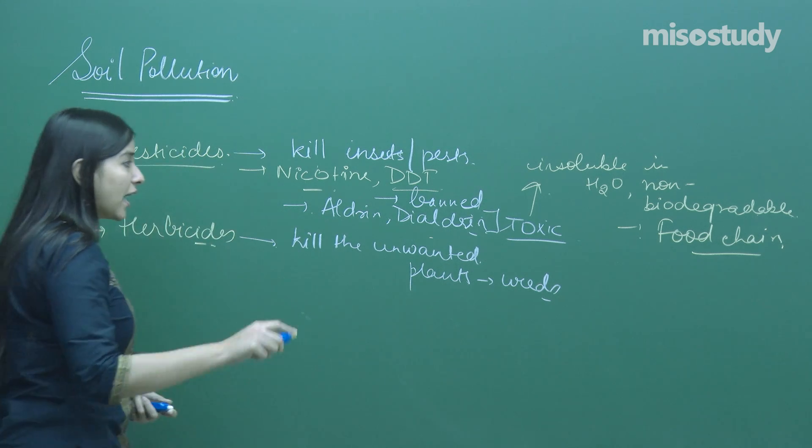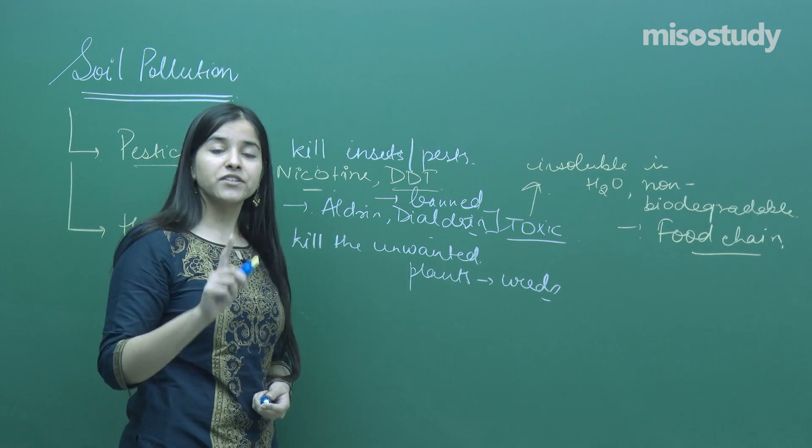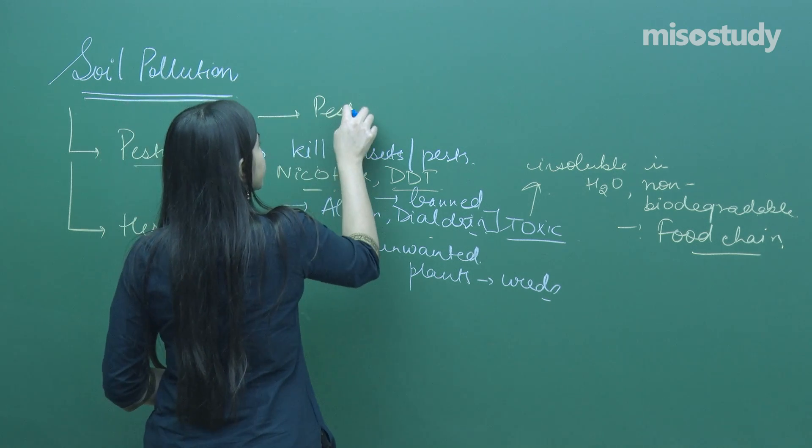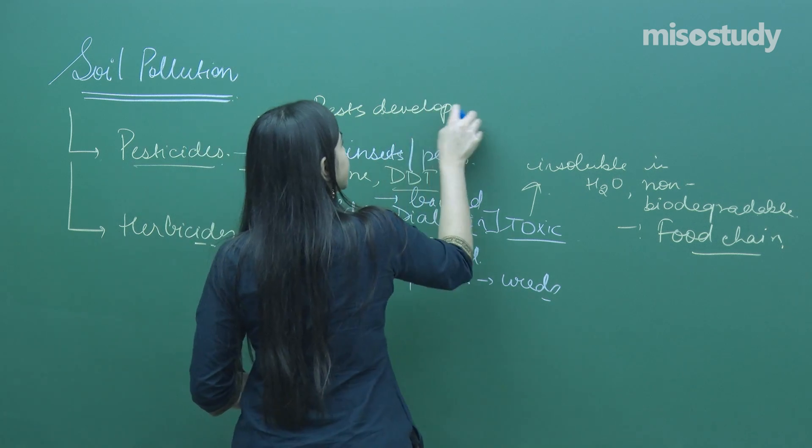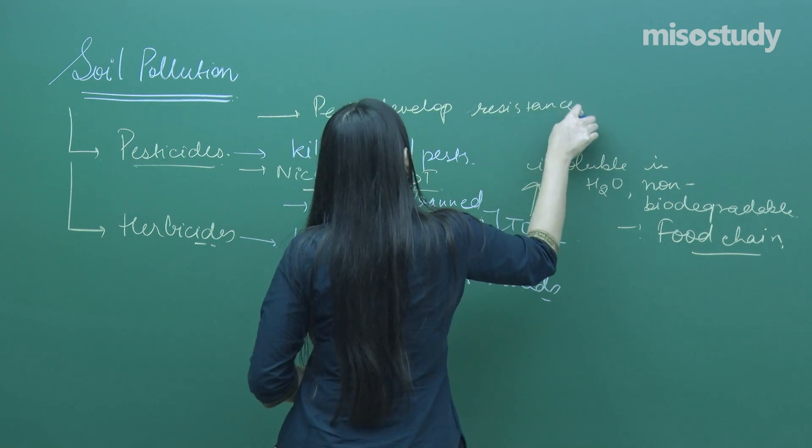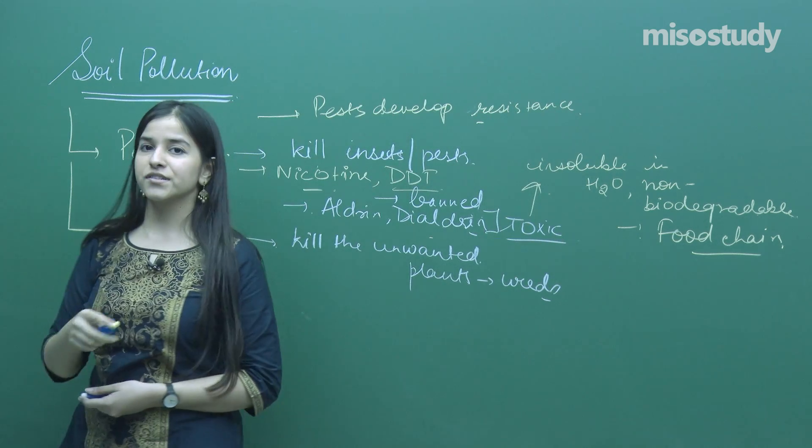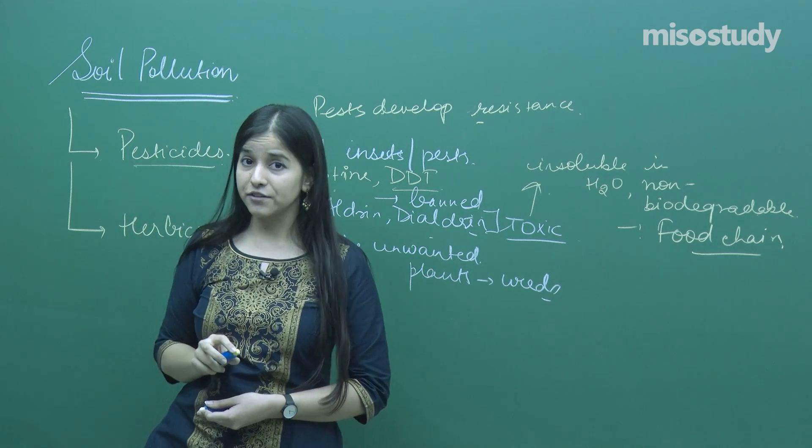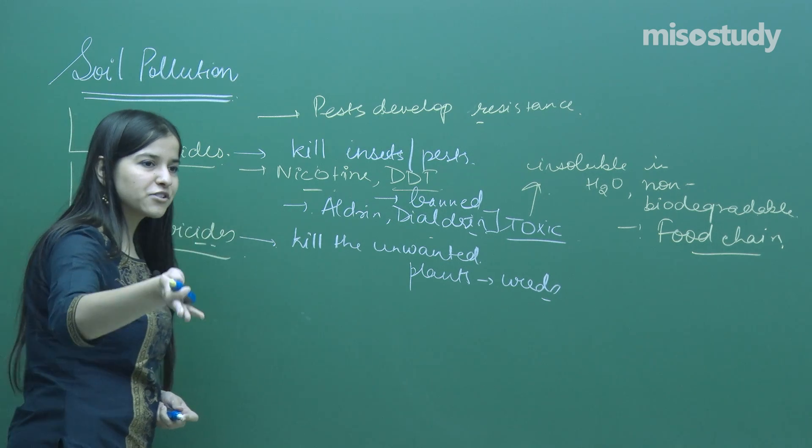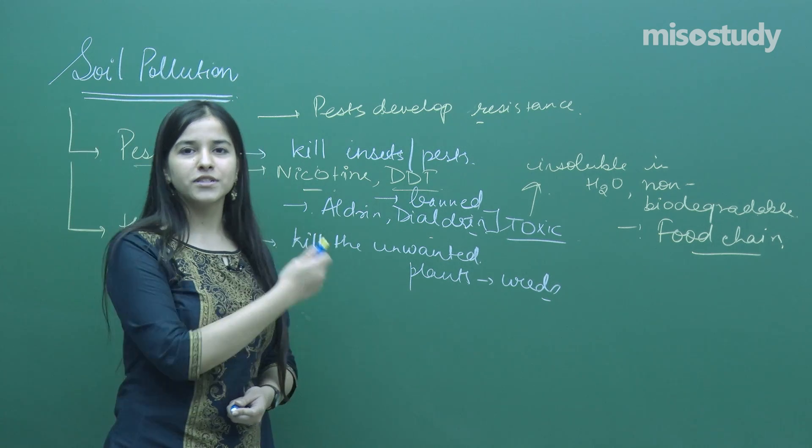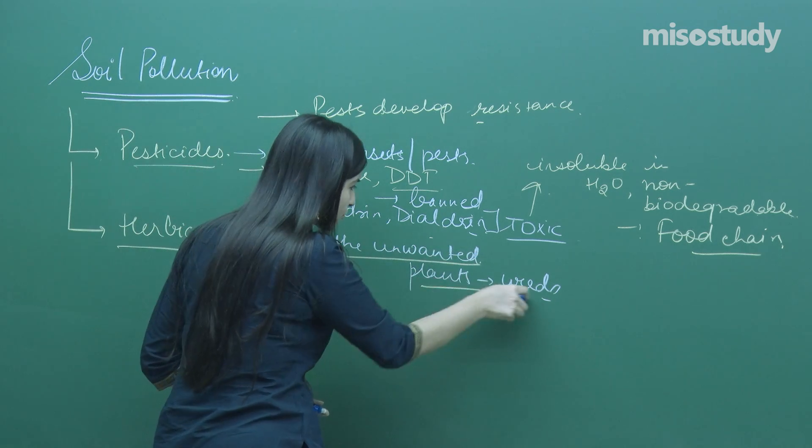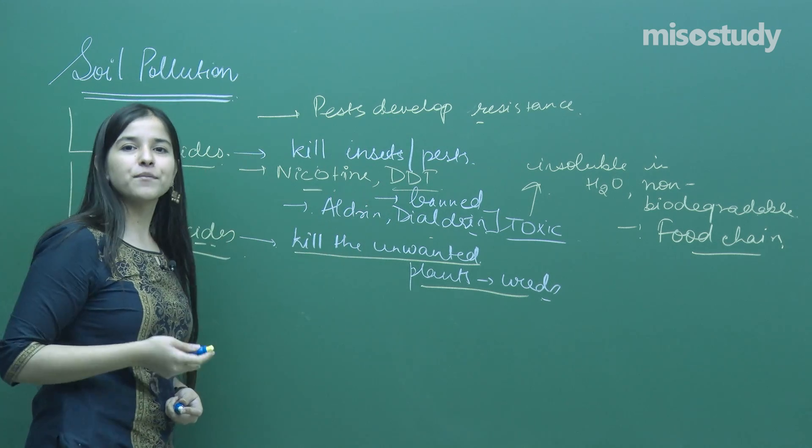The major drawback of pesticides is that pests develop resistance, making them ineffective. Here comes the herbicides. Research has shifted towards herbicides to kill unwanted plants, which can indirectly kill many pests.